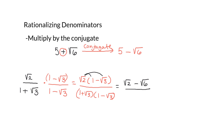In the denominator we expand by distributing each term. So 1 times 1 is 1, and 1 times negative root 3 is negative root 3. Then we distribute root 3 as well: root 3 times 1 is positive root 3, and root 3 times negative root 3 is negative root 9.